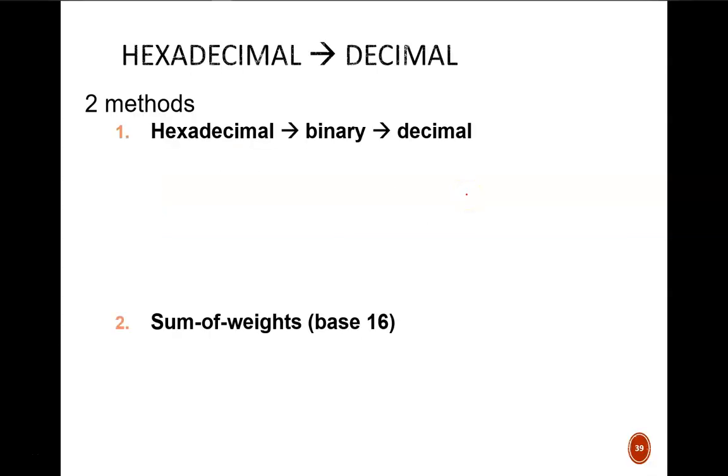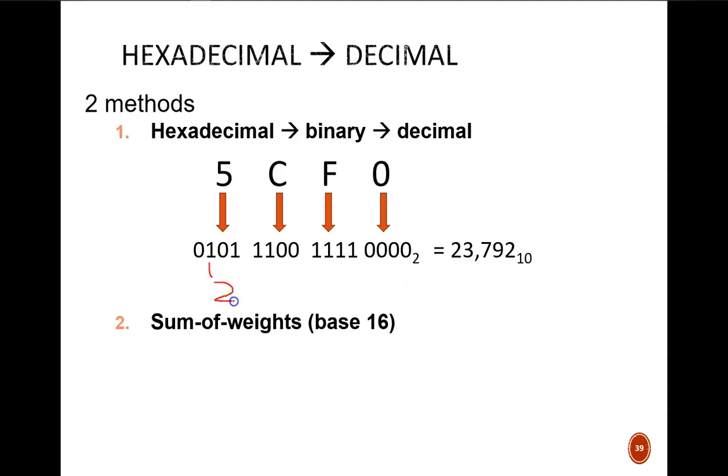Let's begin with converting a number from hexadecimal into decimal. There are two methods shown here. The first simply combines two separate steps that we have learned already. First, we take the hexadecimal number and convert to binary by replacing each hex digit with a binary nibble. Then, we convert the lengthy binary number into decimal. This is done through multiplying each bit by its corresponding weight and then summing them all. For instance, this leftmost 1 carries a weight of 2 to the 14th power.